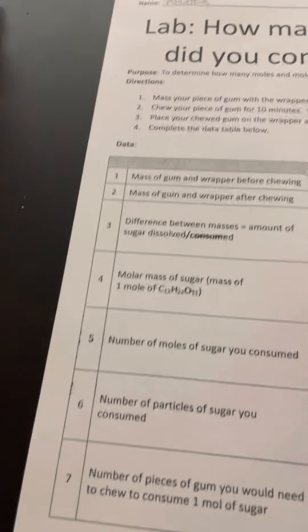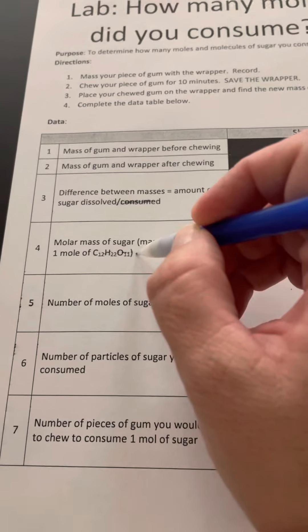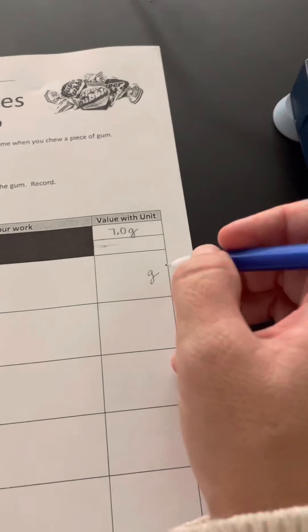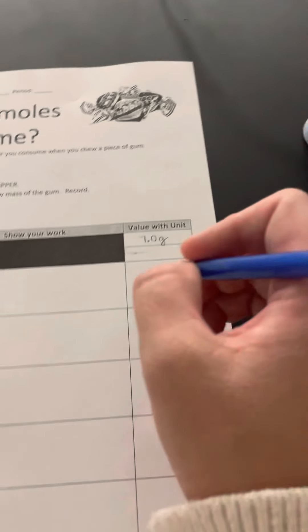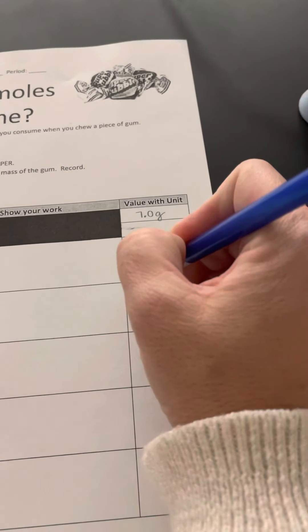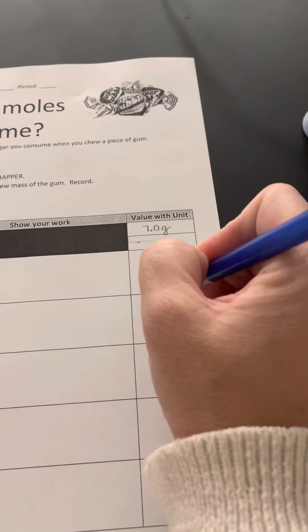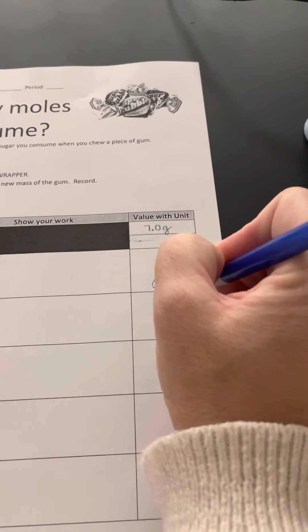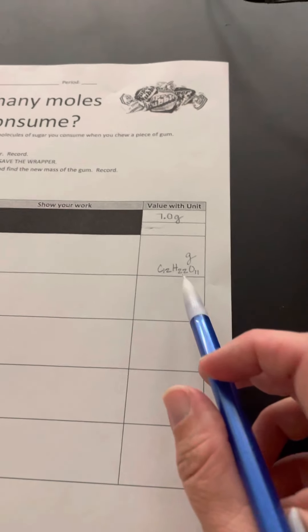And then the sugar — the type of sugar that's in gum — is C12H22O11. So we know that this difference is going to be of C12H22O11, because that's the type of sugar that's in there.